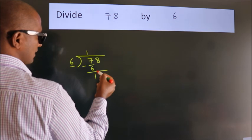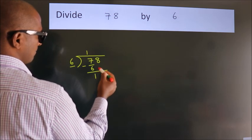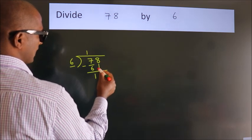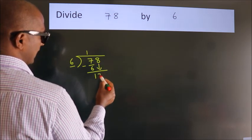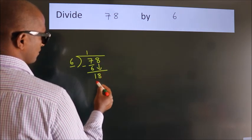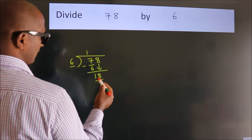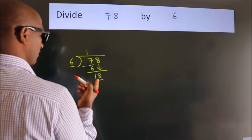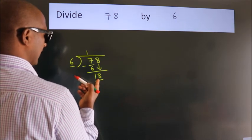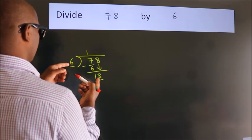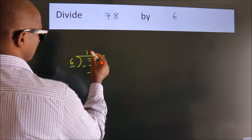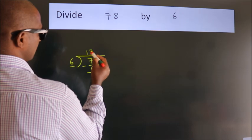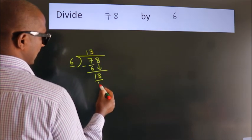After this, bring down the beside number. So, 8 down — so, 18. When do we get 18 in the 6 times table? 6 threes = 18.